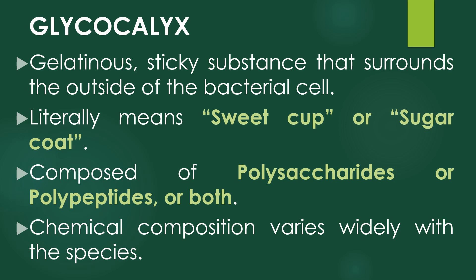The glycocalyx is composed of polysaccharides, polypeptides, or both. The chemical composition of the glycocalyx varies widely within species, and these chemicals are produced inside the cell and are extruded onto the cell surface.